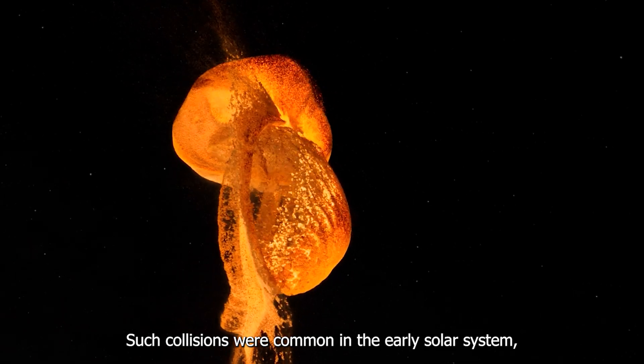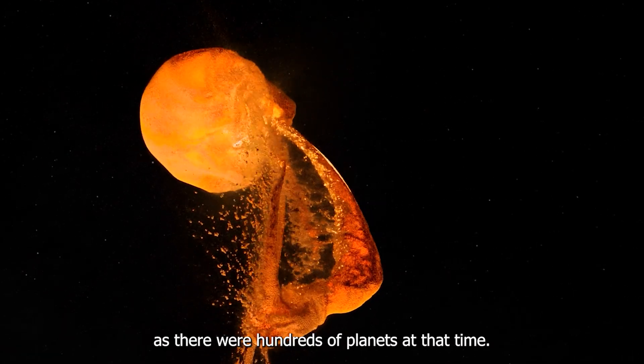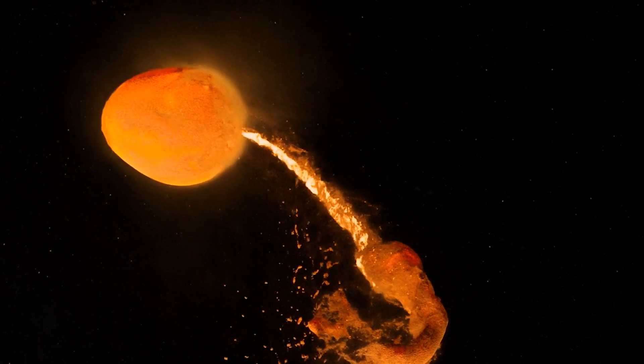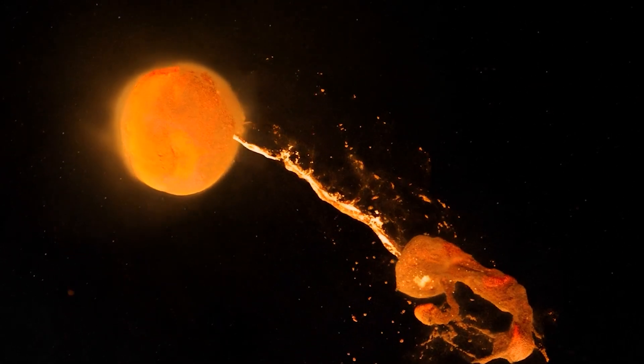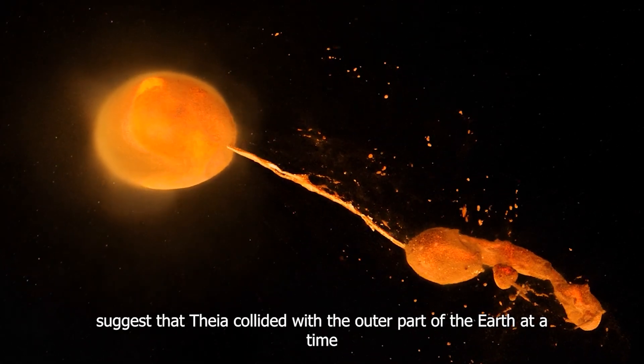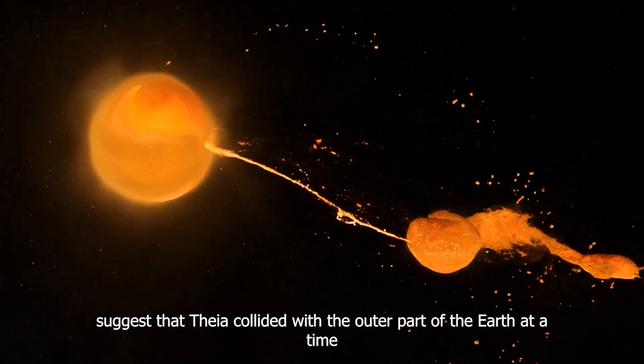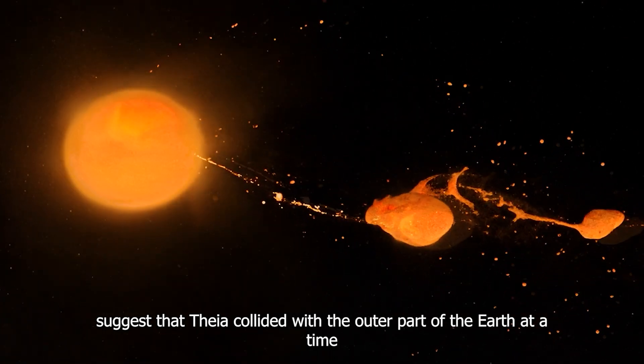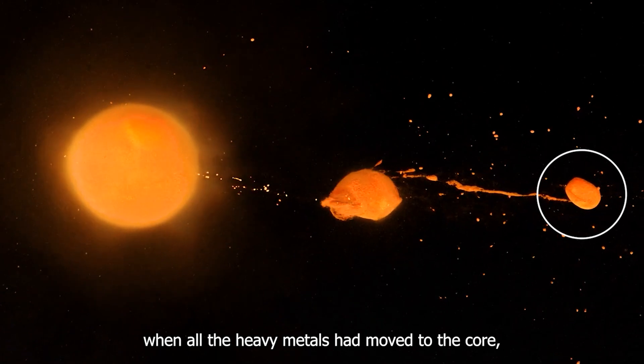Such collisions were common in the early solar system, as there were hundreds of planets at the time. Scientists suggest that Thea collided with the outer part of the Earth at a time when all the heavy metals had moved to the core, which is why the density of the Moon is so low.